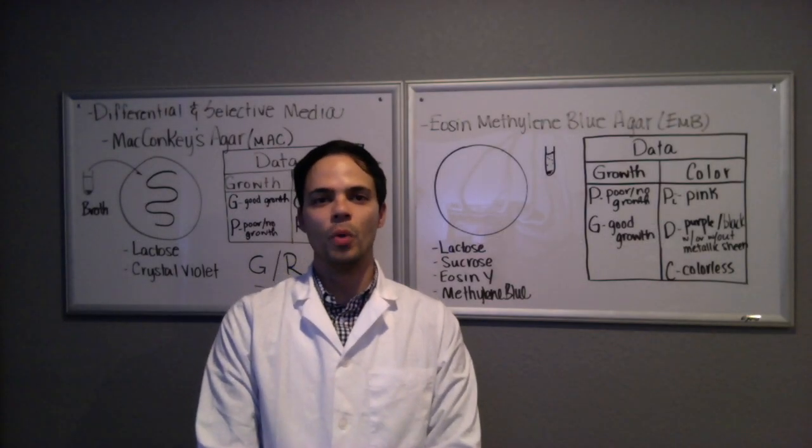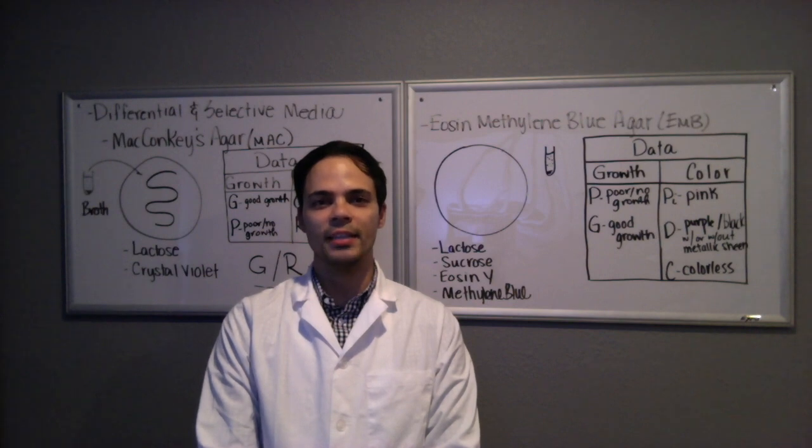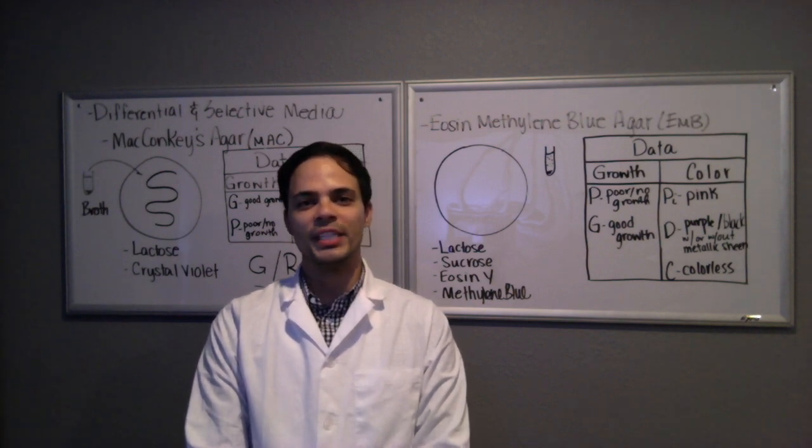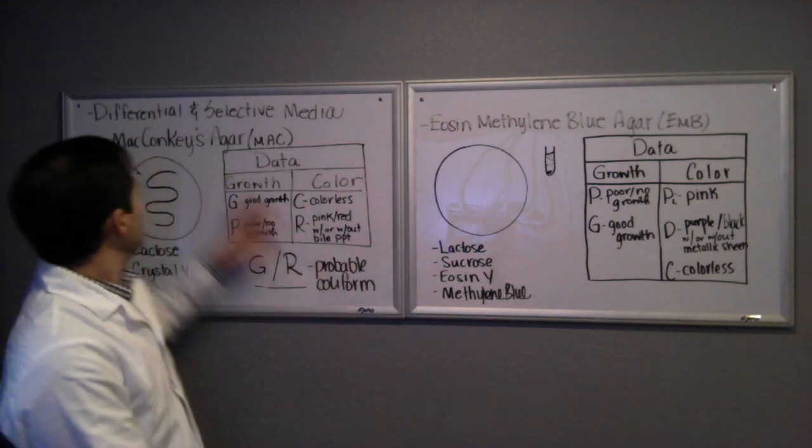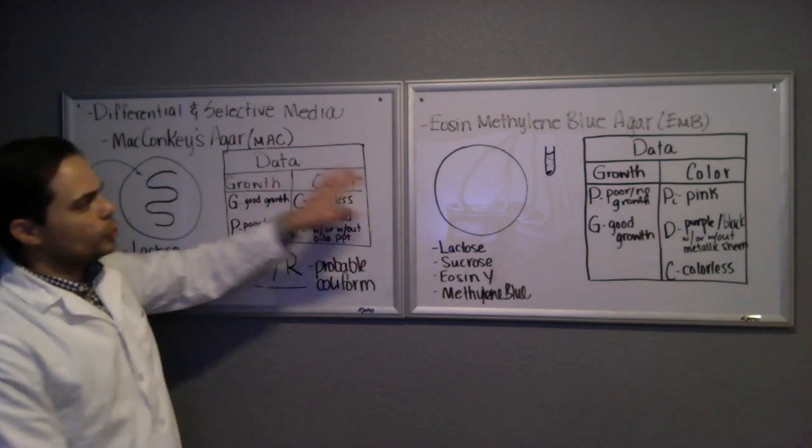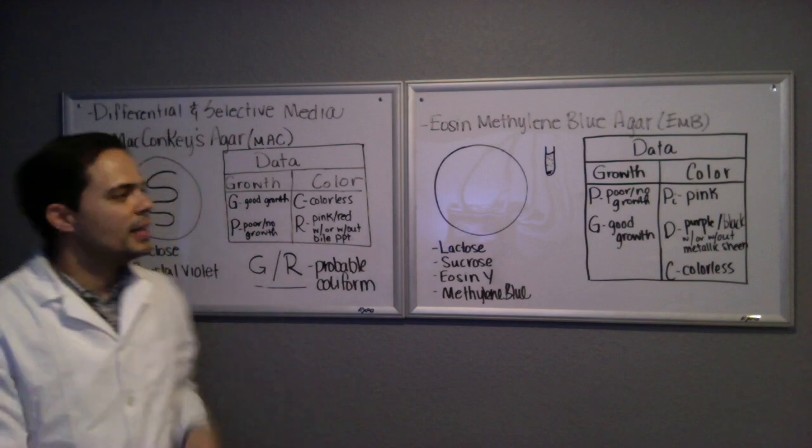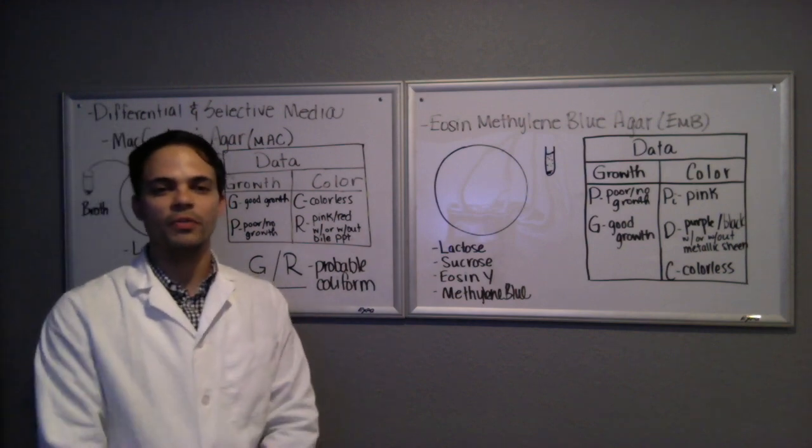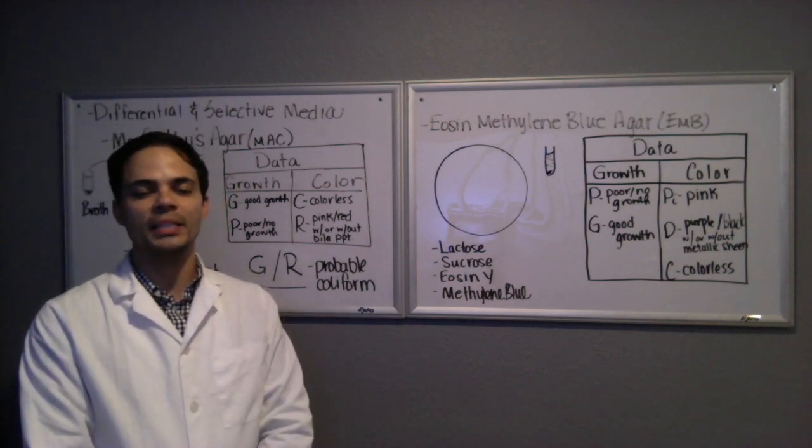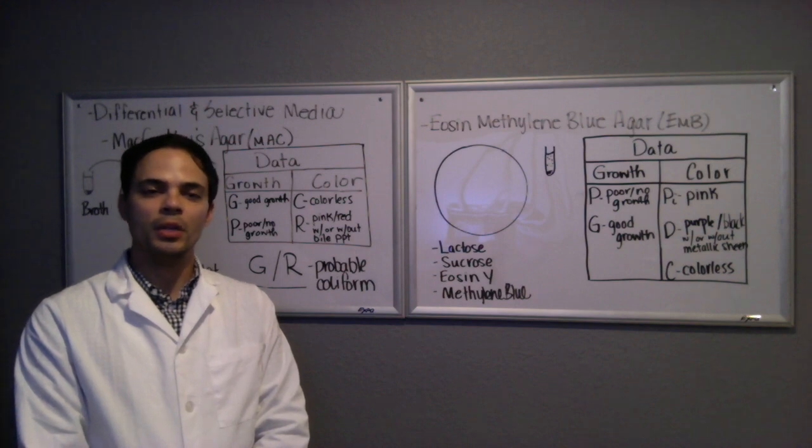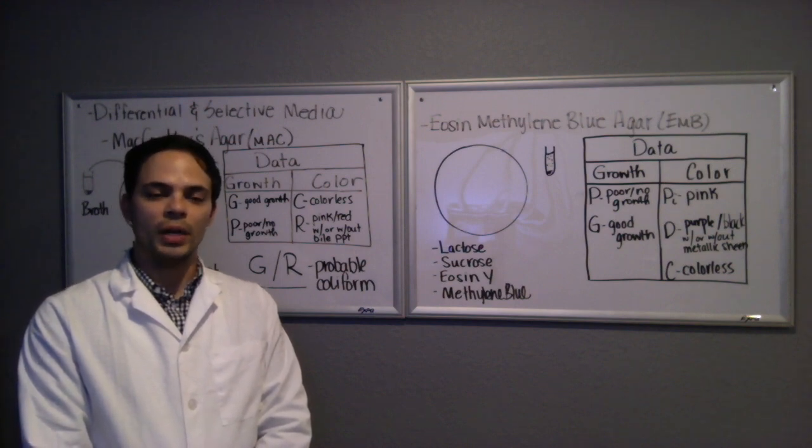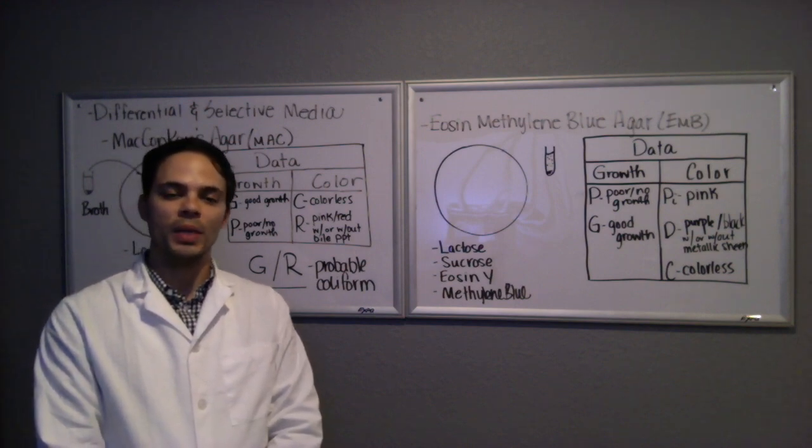Hello students, today we are going to discuss differential and selective media. The two media we are discussing today are McConkey's agar or MAC for short, and eosin methylene blue agar or EMB for short. These media are important for differentiating members of Enterobacteriaceae, especially the coliforms, which can possibly infect humans causing disease.